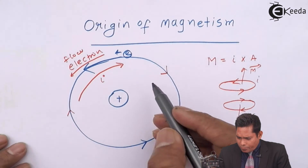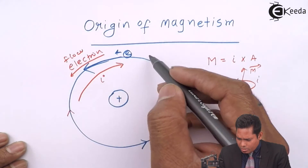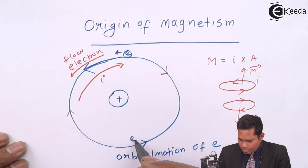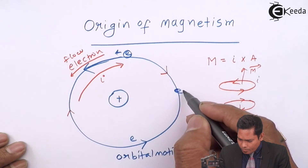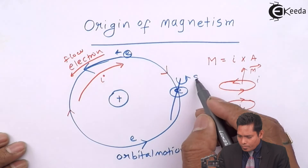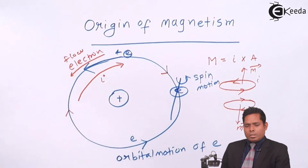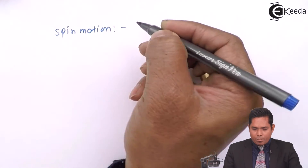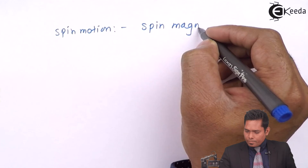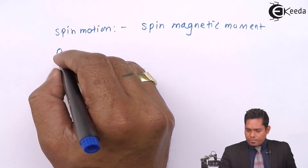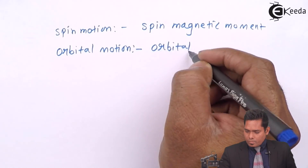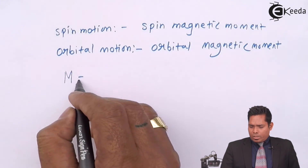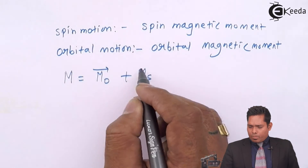Because of the orbital motion of the electron, we have got the orbital magnetic moment, and because of the spin motion of the electron, we have got the spin magnetic moment. So the total magnetic moment is the orbital magnetic moment plus the spin magnetic moment — this is the total magnetic moment of the atom.